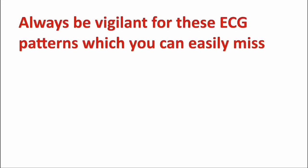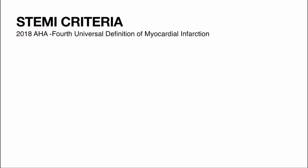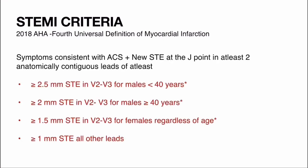Always be vigilant for ECG patterns which you can easily miss, as they can lead to poor outcomes. You should be aware of the 4th universal definition of myocardial infarction according to 2018 AHA guidelines. For calling STEMI, there should be symptoms consistent with ACS plus new ST elevation in at least 2 contiguous leads — at least 2.5 mm in males under 40, 2 mm in males 40 or older, and 1.5 mm in females regardless of age in leads V2 and V3. In all other leads, at least 1 mm of ST elevation is required.